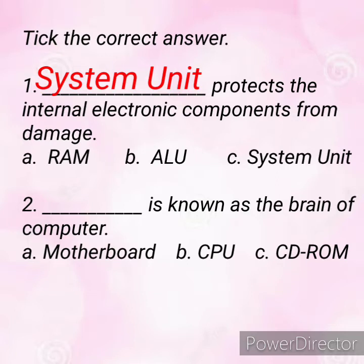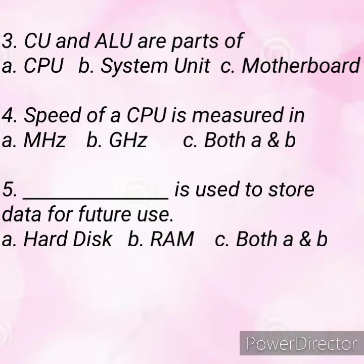The second question is: dash is known as the brain of the computer. The options are A) motherboard, B) CPU, and C) CD-ROM. Can you guess? Yes, exactly — the CPU is known as the brain of the computer.